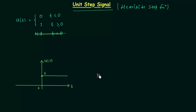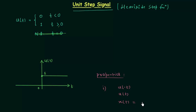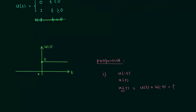The next part of this lecture is the properties of the unit step signal. In the first property, we will perform time reversal to obtain u(-t). The original signal is u(t), and let's say we have a signal x(t) which is equal to u(t) plus u(-t). We need to find out signal x(t).